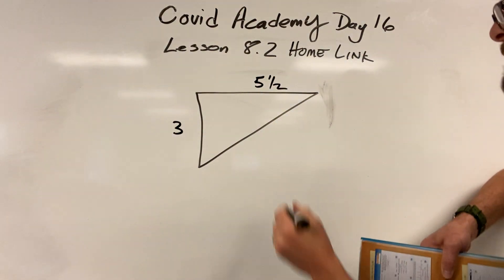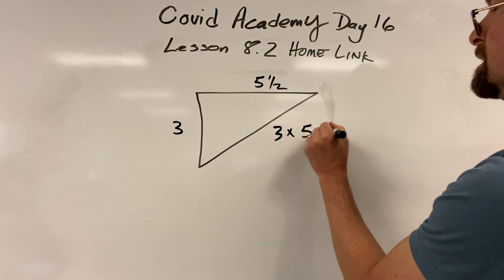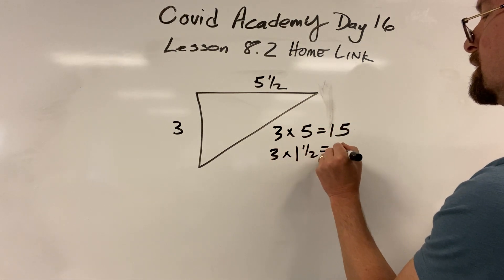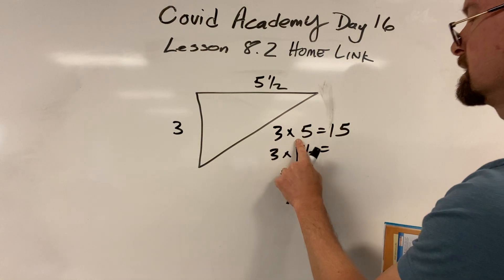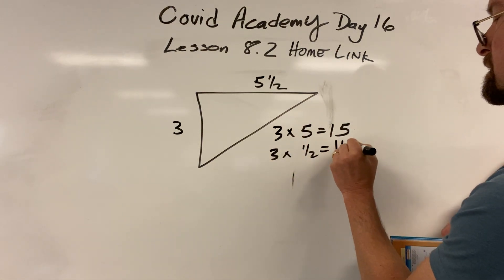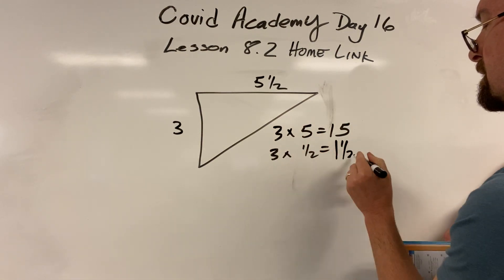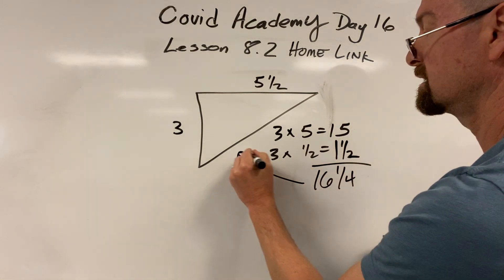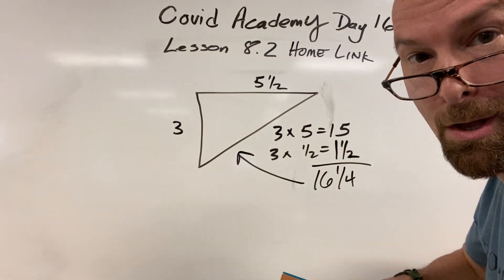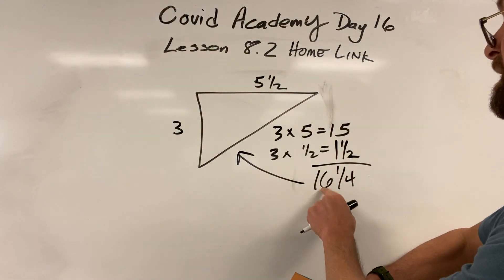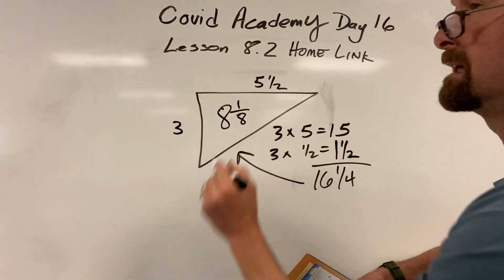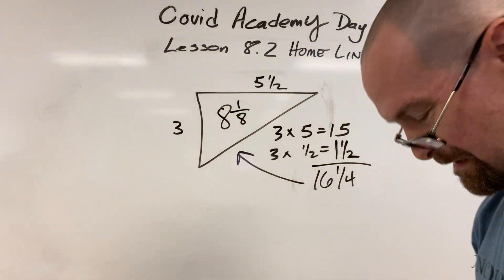You got to do 3 times 5 and a half. So 3 times 5 is 15. 3 times a half - I started to write the answer as 1 and a half. Put them together and you get 16 and a half. But it's a triangle. Hello? We got to take half of that. Half of the 16 is 8. Half of a half is a fourth. 8 and a fourth. Isn't that pretty?